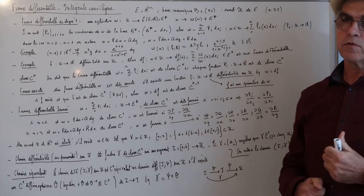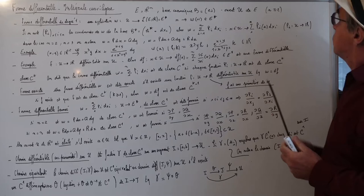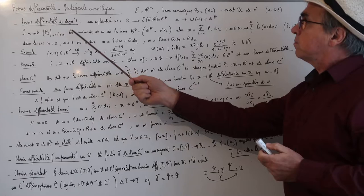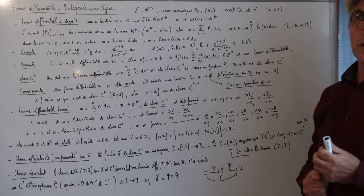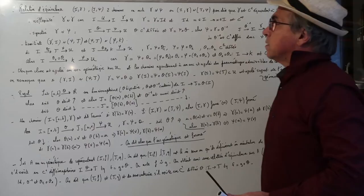L'espace E est R puissance n, muni de sa base canonique B. U est un ouvert non vide de E et on prend n supérieur ou égal à 2. Une forme différentielle de degré 1, c'est une application ω de U vers E étoile, l'ensemble des applications linéaires de E vers R.